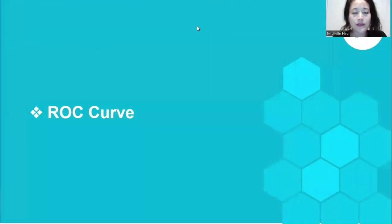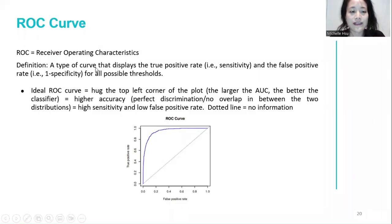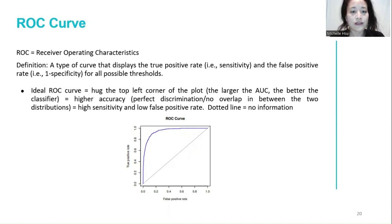As opposed to producing many confusion matrices for all possible threshold levels, the ROC curve provides a comprehensive way to visualize the relationship between these measures and the threshold level. ROC stands for receiver operating characteristics and it shows the trade-off between true positive rate (sensitivity) and false positive rate (1 minus specificity) for all possible thresholds. An ideal ROC curve would hug the top left corner, showing perfect discrimination between the two distributions with high sensitivity and low false positive rate. The diagonal dotted line illustrates the ROC curve for a test that provides no information — meaning the distribution of test values for disease and non-disease patients overlap entirely.